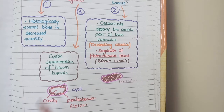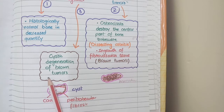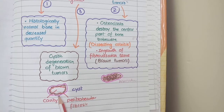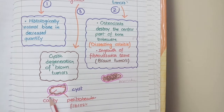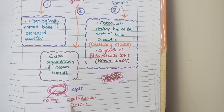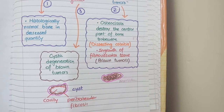The next lesion is osteitis fibrosa cystica. Over time, these brown tumors undergo degeneration of their central part. This degeneration leads to a cavity in the brown tumor surrounded by fibrous tissue. These cyst-like cavities surrounded by peritrabecular fibrosis are known as osteitis fibrosa cystica, caused by cystic degeneration of brown tumors.